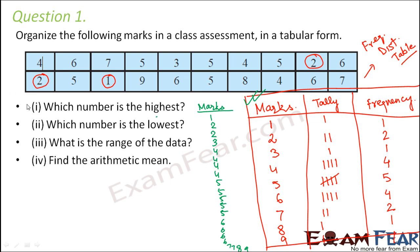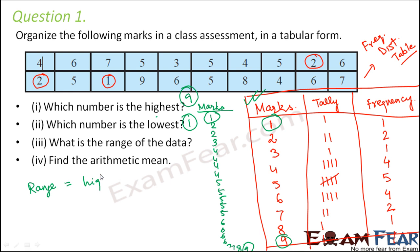Now let us try to answer the questions. Which number is the highest? Looking at both tables, you can very easily say the highest is the number at the end — that is 9. And the lowest is the first number — that is 1. What is the range of data? Range is always the highest number minus the lowest number. So highest is 9, lowest is 1, therefore the range is 8.